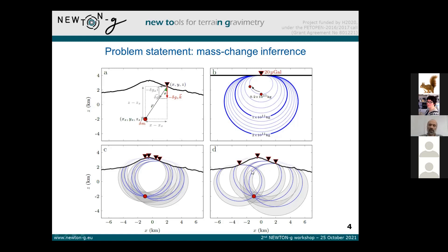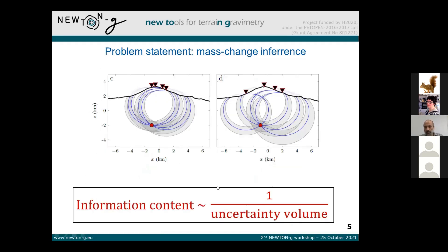The task is to find the best placement such that this uncertainty volume — represented by the dark gray area — is minimized. We can show that this is equivalent to maximizing the information content, defined as the inverse of the uncertainty volume. In mathematical terms, the uncertainty volume is the determinant of the covariance matrix associated with these four unknowns. We relate this covariance matrix to the location of the gravimeters on the surface and their associated uncertainty, and then calculate the determinant. The inverse of the determinant is the information content, which we maximize as the objective function.